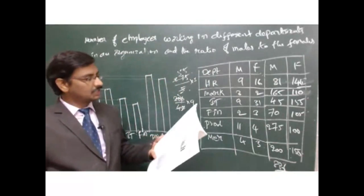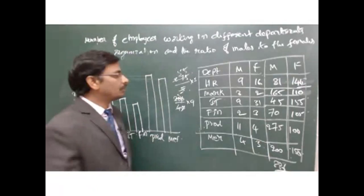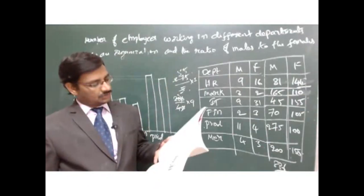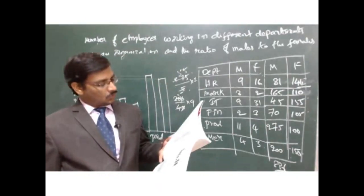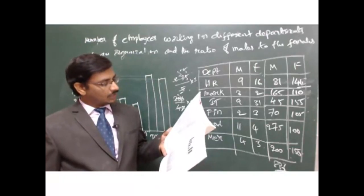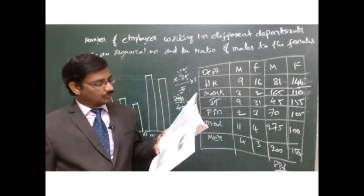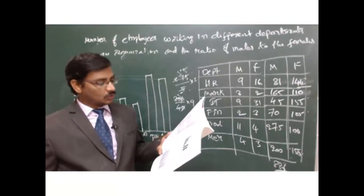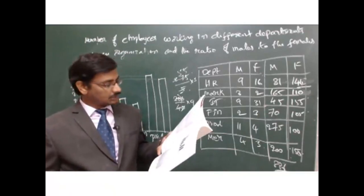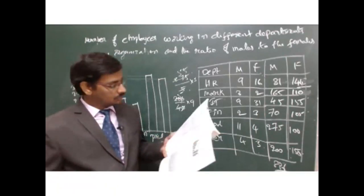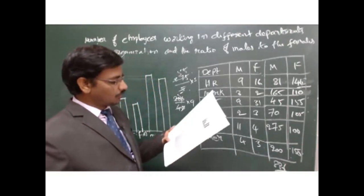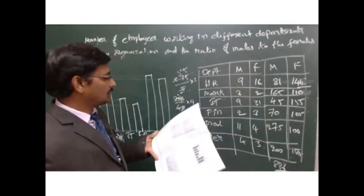Next question: What is the number of females working in the HR department? Answer: 144. Next question: What is the ratio of total number of employees working in the production department to those working in the merchandise department?